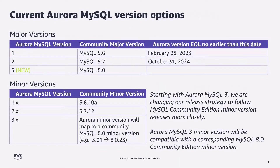Let's look at Aurora MySQL version compatibility with Community and changes starting with Aurora MySQL 3.0. This is covered in our documentation section called Aurora Version Policy, which details Aurora MySQL versions including minor and major versions, patches, long-term support, and versioning philosophy. We currently support three major versions: MySQL 5.6 compatible (Aurora 1.x), MySQL 5.7 compatible (Aurora 2.x), and the latest MySQL 8.0 compatible (Aurora 3.x).